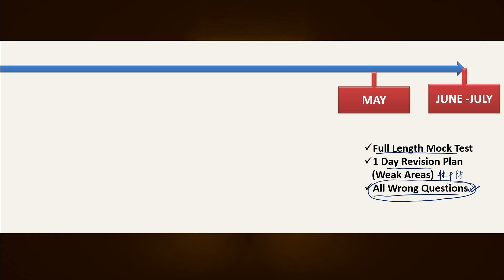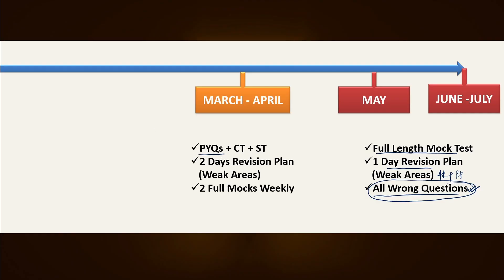From March to April, you should focus on solving all relevant types of PYQs, attempting more chapter-wise tests and sectional tests. This ensures you are applying what you learned during syllabus completion in a time-bound manner. Every two days, assign yourself to a particular subject and ensure there are no weak areas. Every week, attempt only two full mocks — do not exhaust yourself, as from May to July you will be attempting approximately 50 mocks. Rather than exhausting yourself through mocks, focus on minute details and get better.